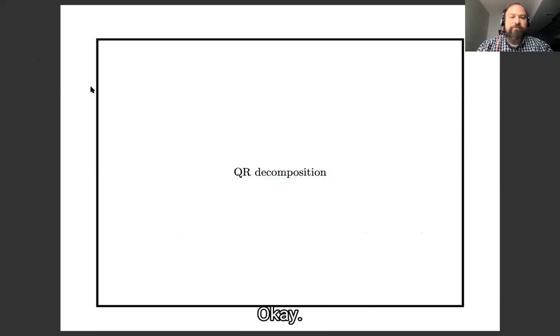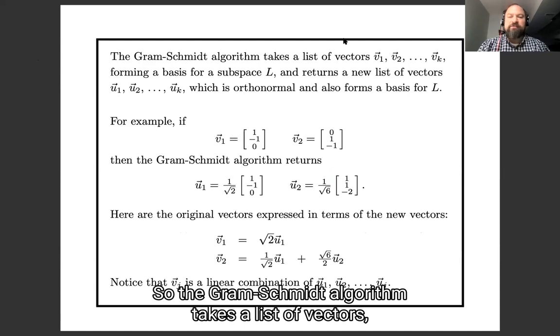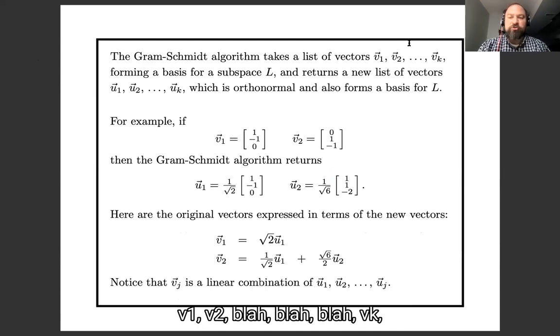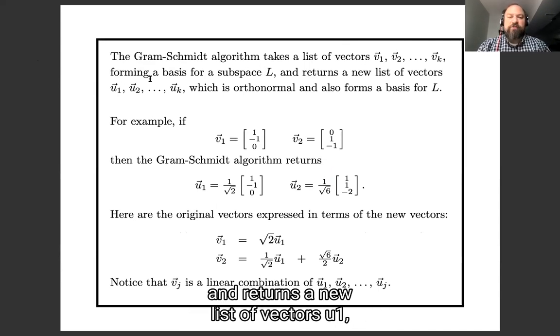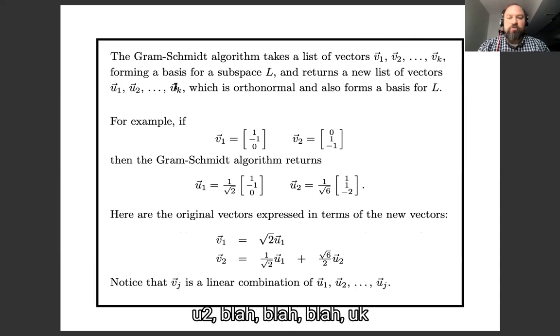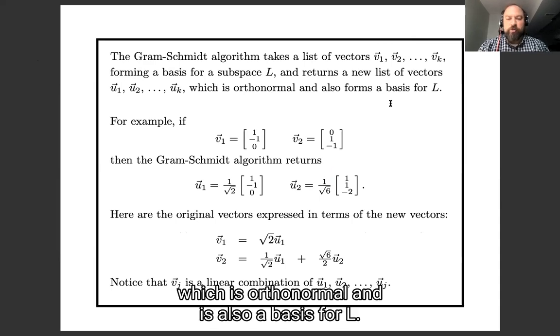Okay. So the Gram-Schmidt algorithm takes a list of vectors v1, v2, blah blah blah, vk, which are a basis for subspace L, and it returns a new list of vectors u1, u2, blah blah blah, uk, which is orthonormal and is also a basis for L.